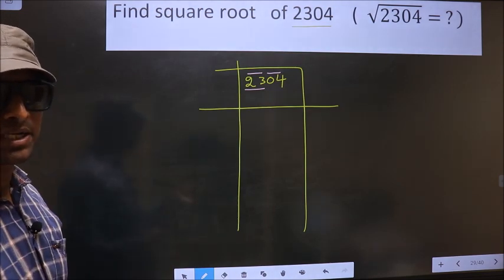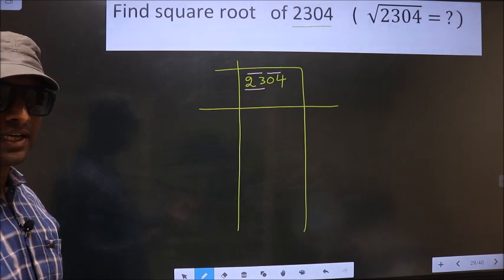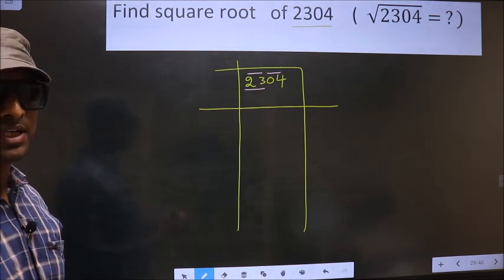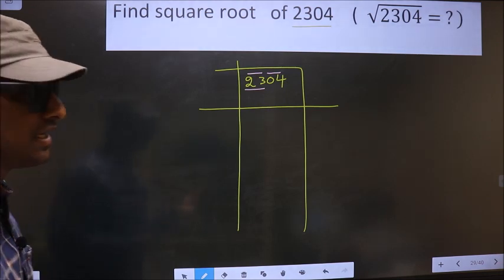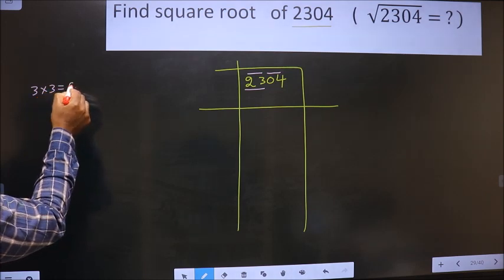23 is not a perfect square. So now we should check 23 will lie between which 2 perfect square numbers. And the perfect square numbers are these. That is 3 into 3, 9...